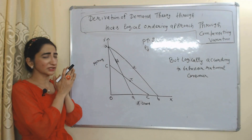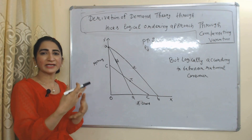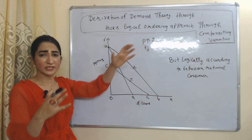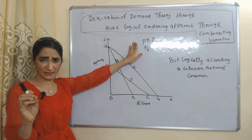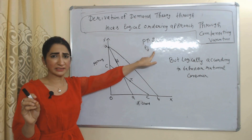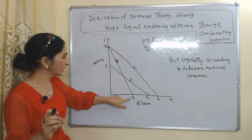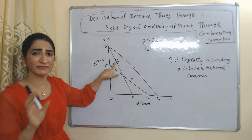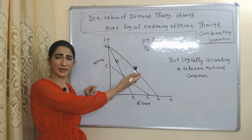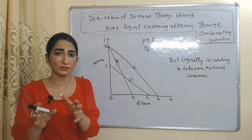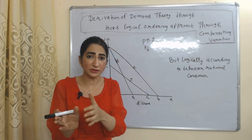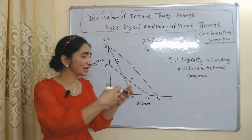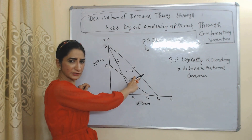Now we'll see the derivation of demand theory through Hicks' logical ordering approach. Like other economists, Hicks also re-established demand theory using this approach. Demand theory tells us when price increases demand falls, and when price falls demand increases. In the diagram, point A is the initial budget line showing initial equilibrium. When the price of X falls, the consumer can buy more of X — real income increases — and the budget line shifts forward. AB is the new budget line.